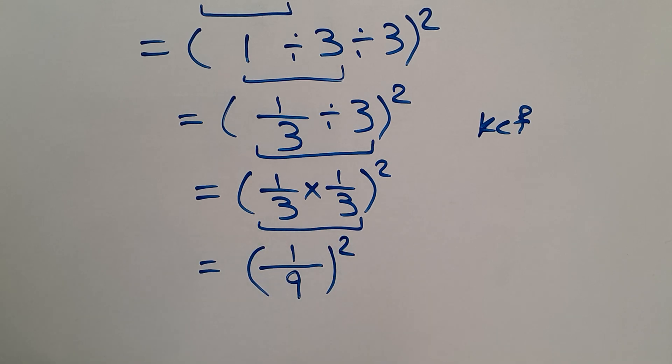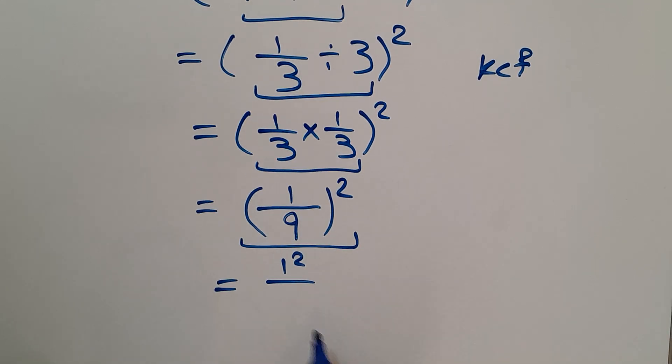1 over 9, squared. And 1 over 9 squared equals 1 squared over 9 squared.